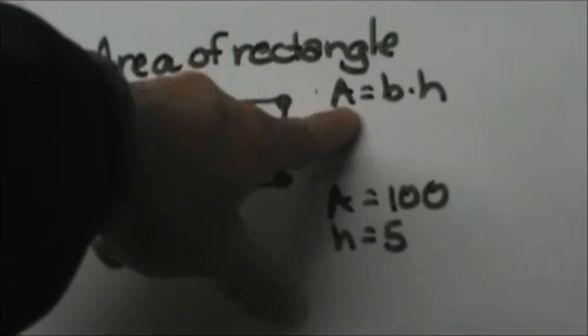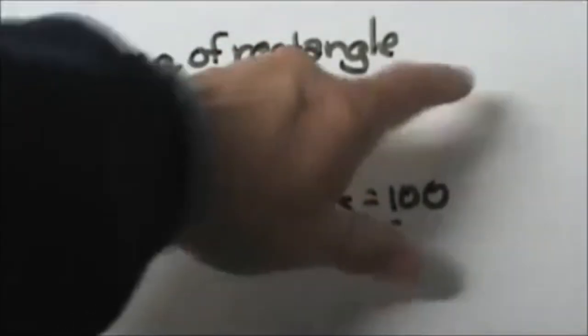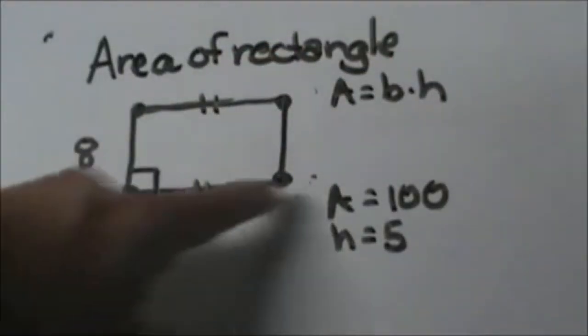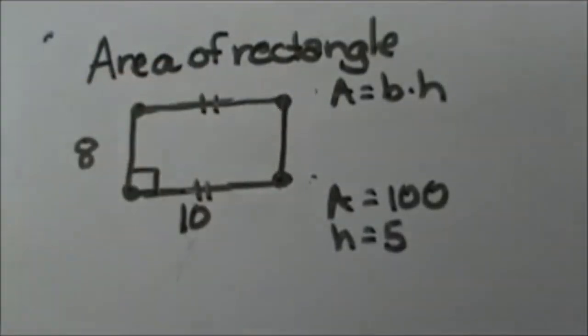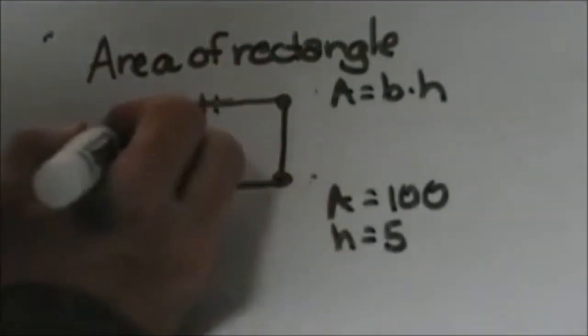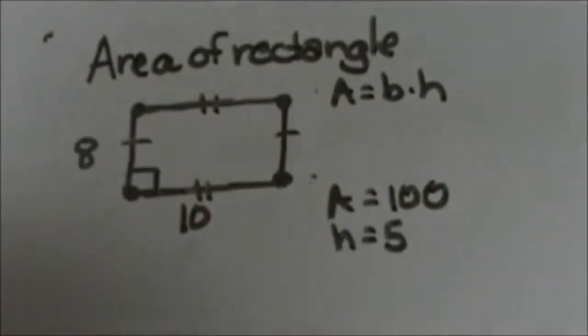The area formula is fairly basic. It's area equals base times height. In this figure we have a rectangle where the opposite sides are congruent. We have the top and bottom that are 10 and the left and right that are both 8.